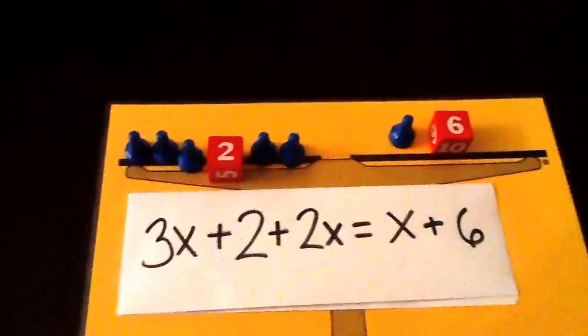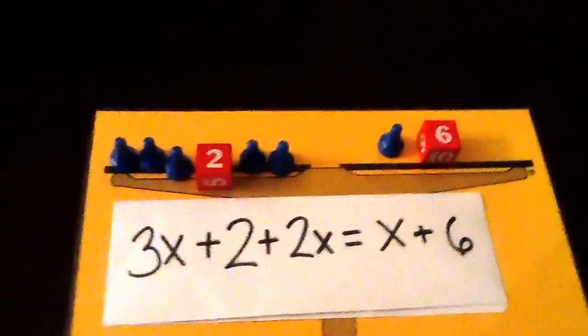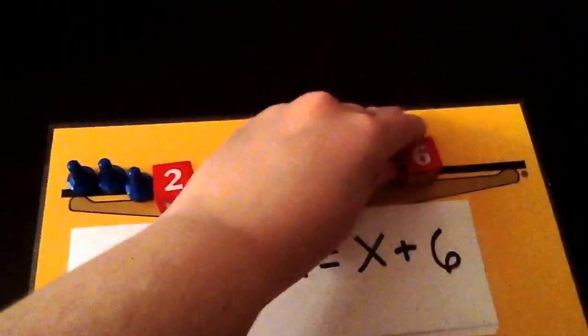Alright, so now what we need to do, we solve it the same way that we've done before. So in this case, we can take a blue pawn from each side. Take one on this side, one on this side.